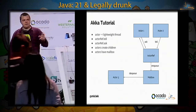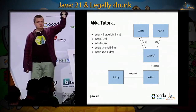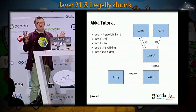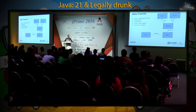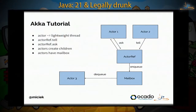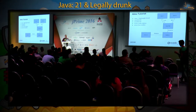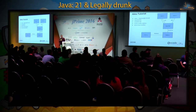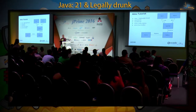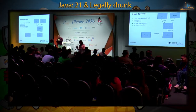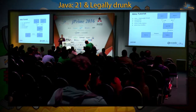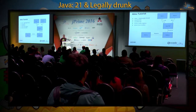Akka tutorial — first things first. How many of you have used Akka in a side project or a normal project? For the rest of you, just three main things to remember in order to understand the live coding part. Akka actors send messages to each other, and each actor just processes messages one at a time — it more or less uses just one thread. There are two types of communication: tell, which is sending a message and forgetting about it, and ask, where you send a message and wait for a reply modeled as a future — so it's all asynchronous.